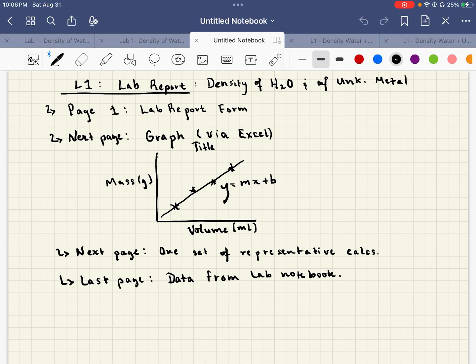Alright, so let's talk about Lab 1 Report, which is for the density of water and the density of an unknown metal.